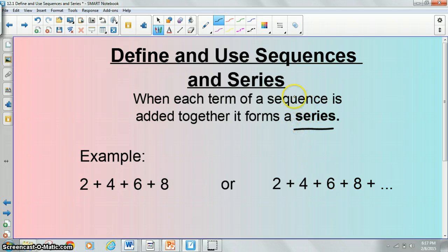So I've just taken the sequence I had in the last slide and turned it into a series. So that series would be 2 plus 4 plus 6 plus 8. So instead of the commas in between, we're adding them. So the sum of this one would be 20.